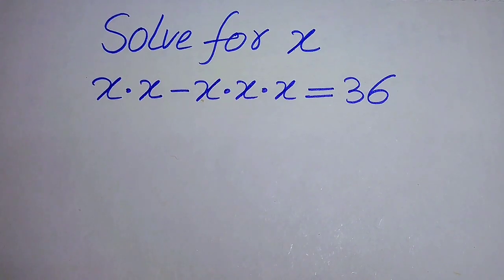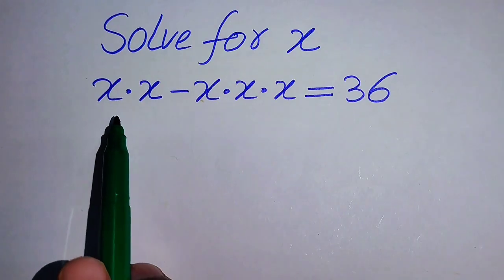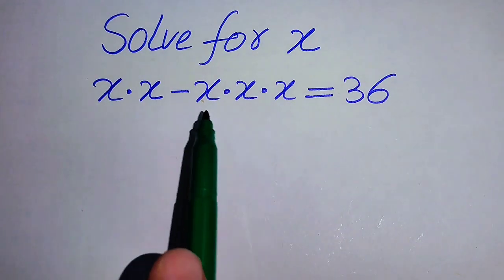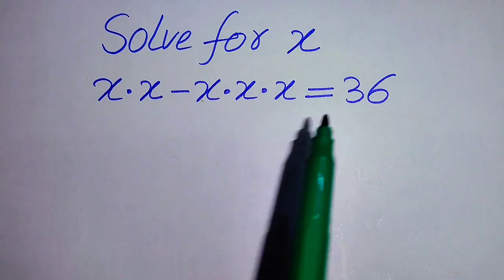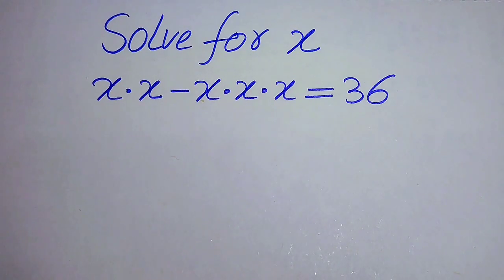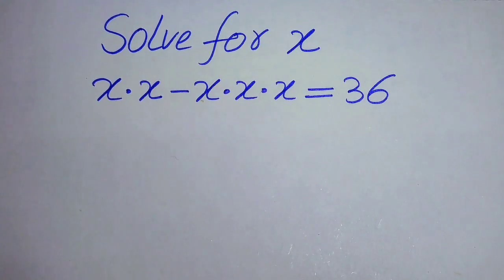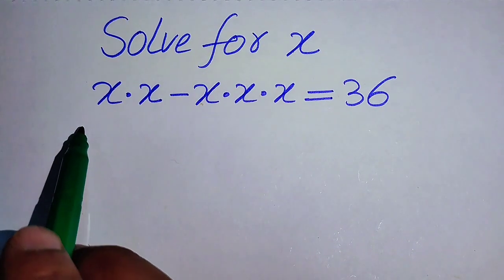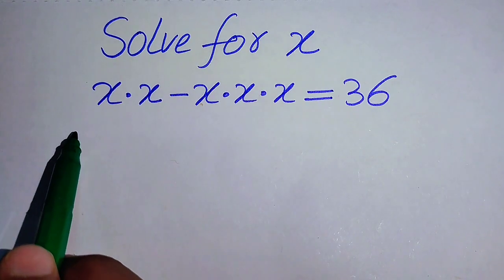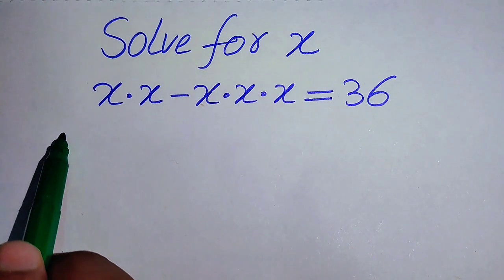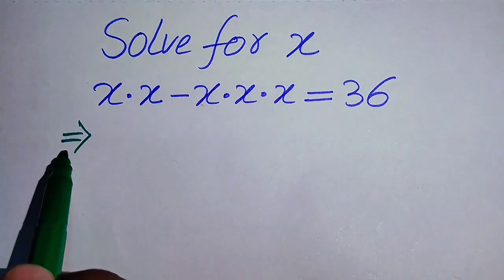Hello everyone, welcome. We solve this nice math olympiad algebra problem. If we have x multiplied by x, minus x multiplied by x multiplied by x, equals 36, we solve this problem for all the values of x. We need to find all the roots of this equation. If you have any other method in mind, please don't hesitate to write it in the comment section. Now we move toward the solution.